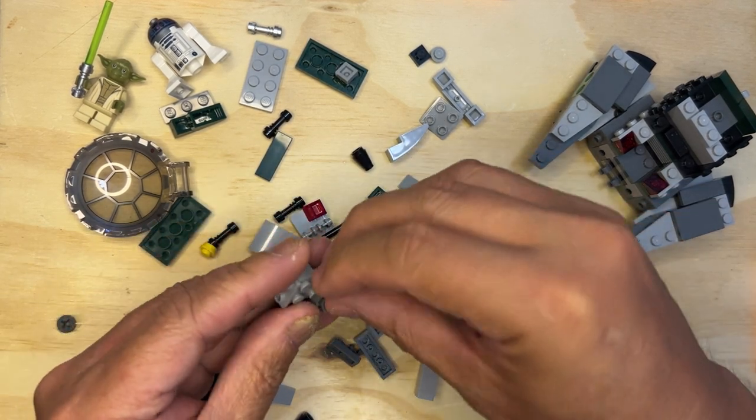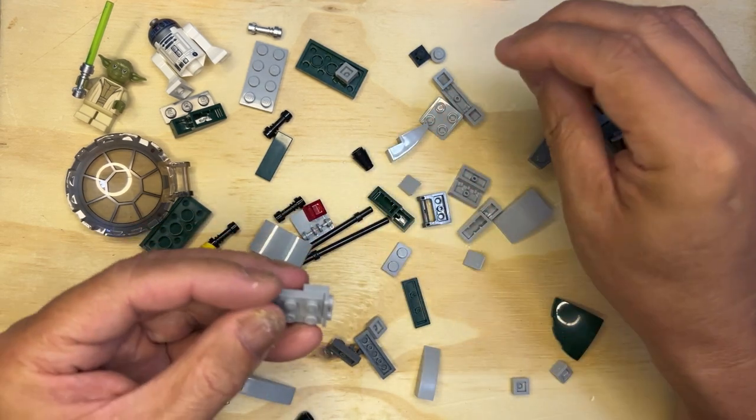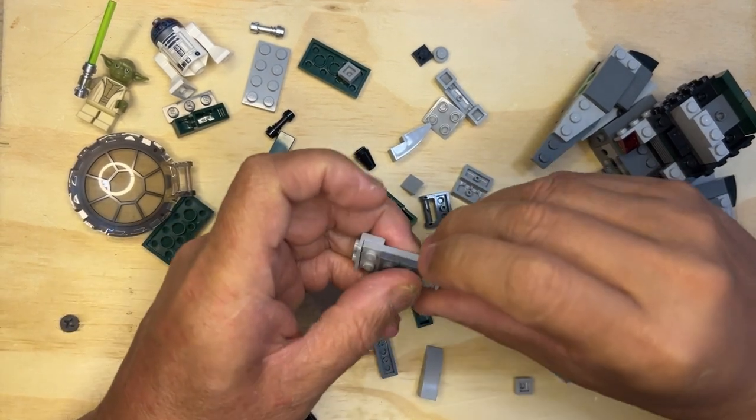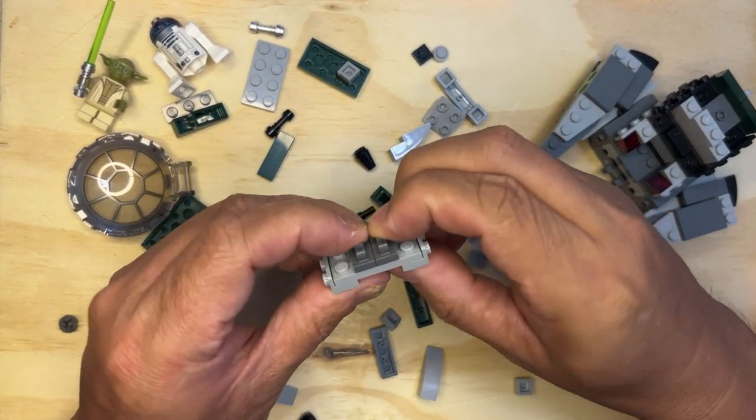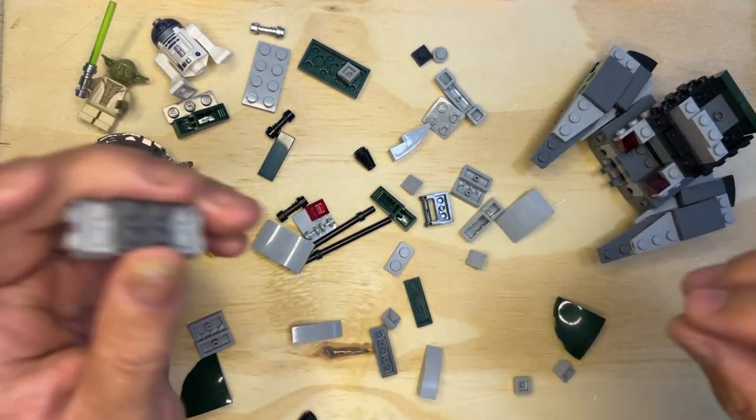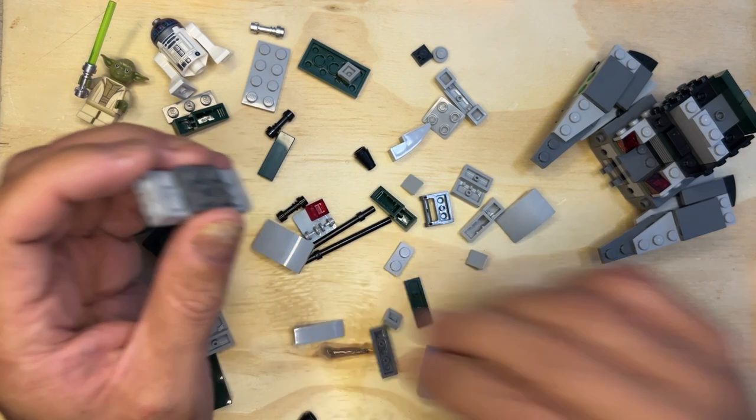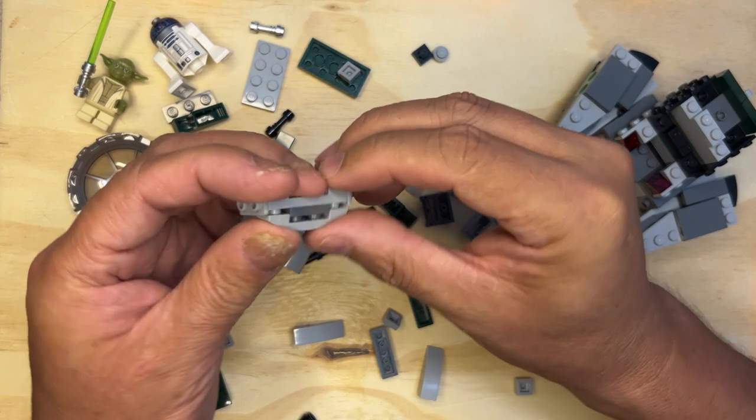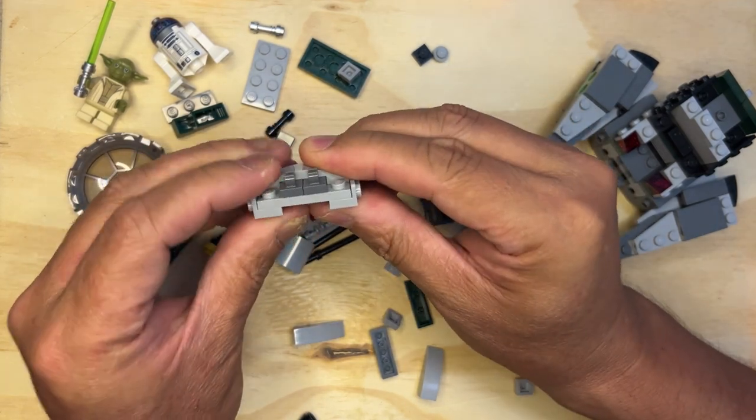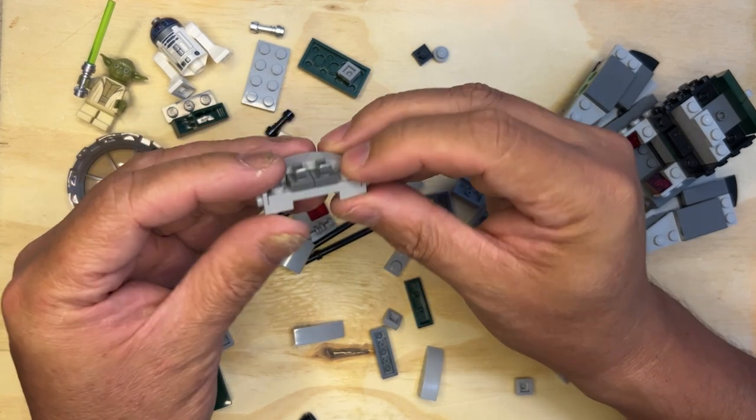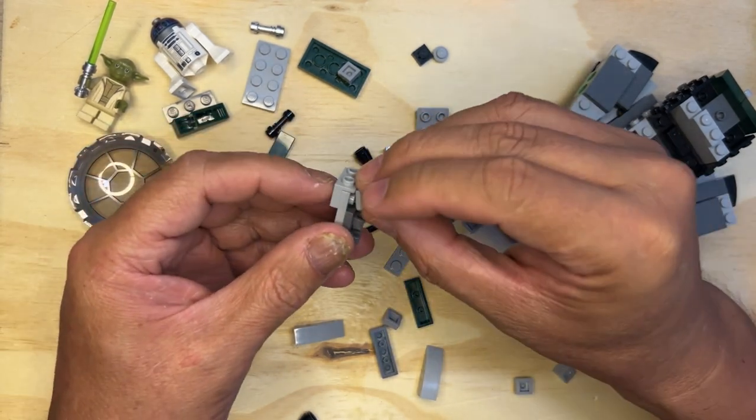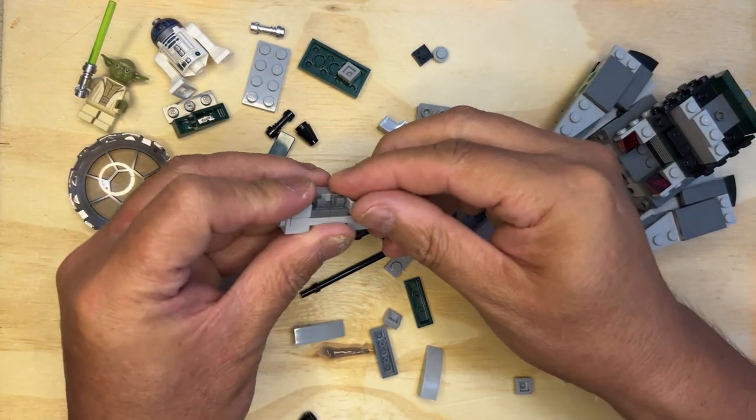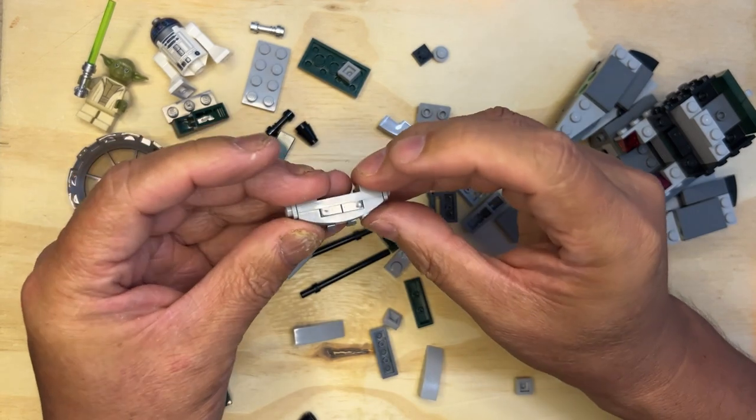And then I need two of these. Two of those. And I've got one of these like this. And I need two cheese slopes facing outward like that. It's pretty cool.